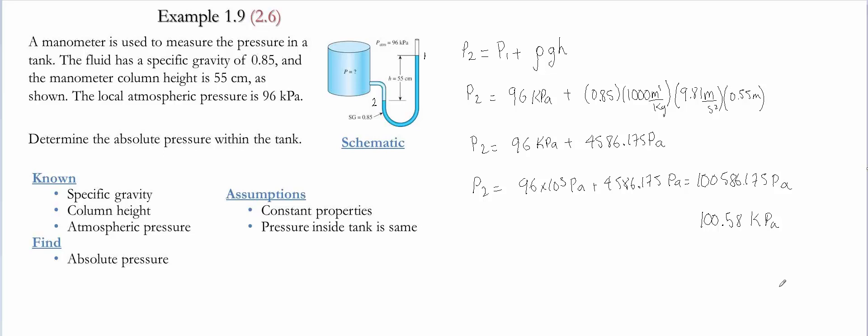Please note that this value is an absolute pressure, since we added the atmospheric pressure that we had at point 1. If the question would have asked to give you the gauge pressure at point 2, the solution would have been simply the 4586.175 pascals.